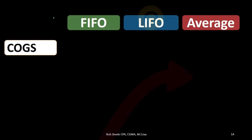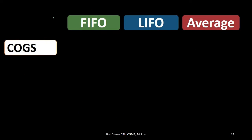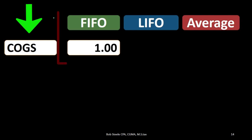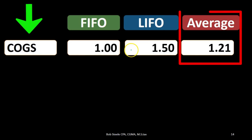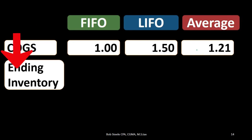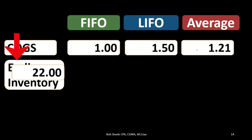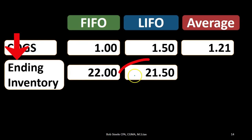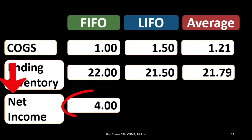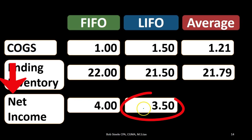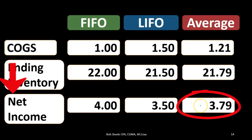The essence is that these are all estimates. In a recap under rising prices: cost of goods sold under FIFO was $1.00, under LIFO it's always higher at $1.50, and the average is in between at $1.21. For ending inventory: FIFO leaves $22 on the balance sheet, LIFO leaves $21.50, and average is in the middle at $21.79. For net income: FIFO produced $4.00 net income, LIFO the smallest at $3.50, and average is in between at $3.79.